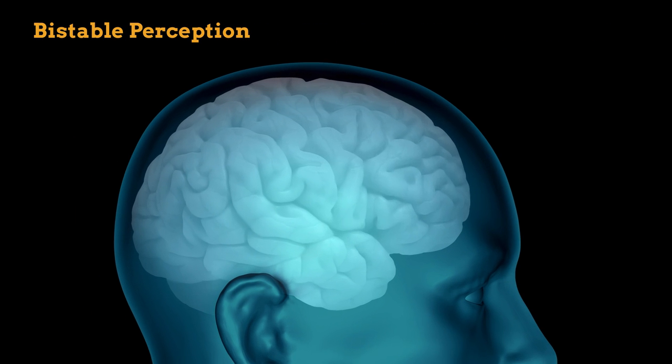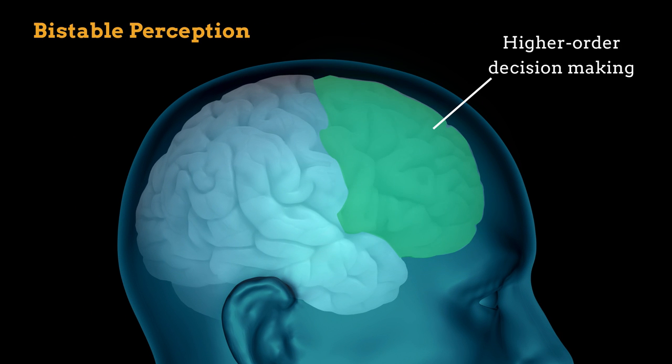Intuition would imply that the higher-order regions of the brain, responsible for more traditional choices, would also be responsible for the perceptual decisions of bistable perception. But some evidence suggests that brain regions primarily involved in sensation may be in control.